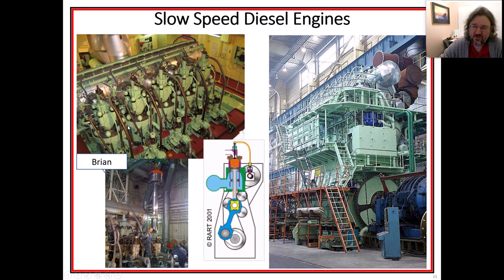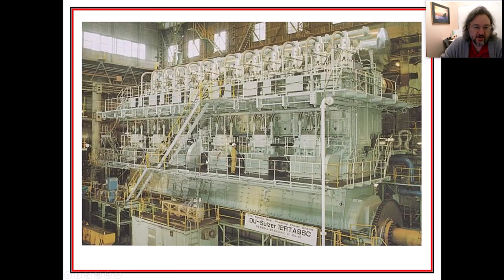They're two-stroke, which means that for every revolution there is a power stroke that's taking place as opposed to a four-stroke. I like these little animations. Here's my good friend from college, Brian, standing next to as they're removing the piston out of one of the big slow speed engines. Here's one very similar to a ship I was on as a cadet where we had five cylinders. This is a Sulzer engine, I think it was an RTA 76.